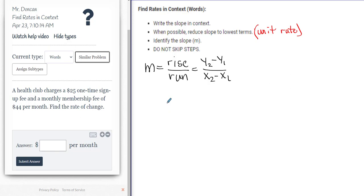Now the difference here: it says a health club charges a $25 one-time sign-up fee. So I'm just going to go ahead and take those values, just write it over here so we can give it some context. So this $25, this is a one-time fee. And then it says, and a monthly membership of $44 per month. So this is $44 per month. So we got two different values.